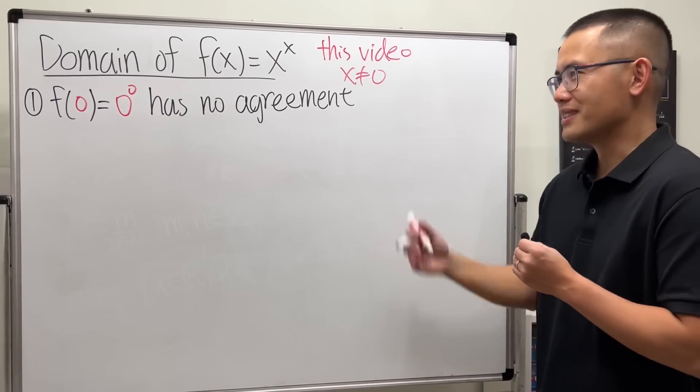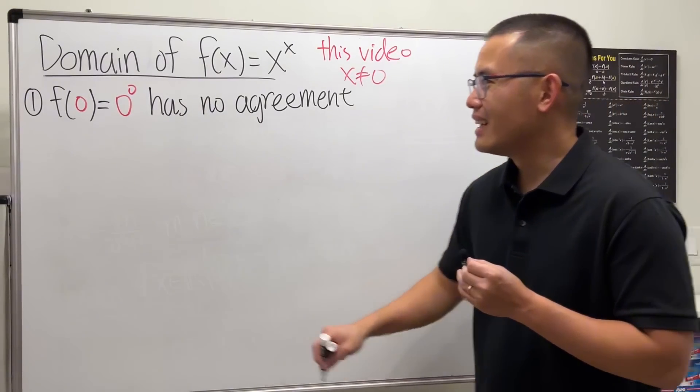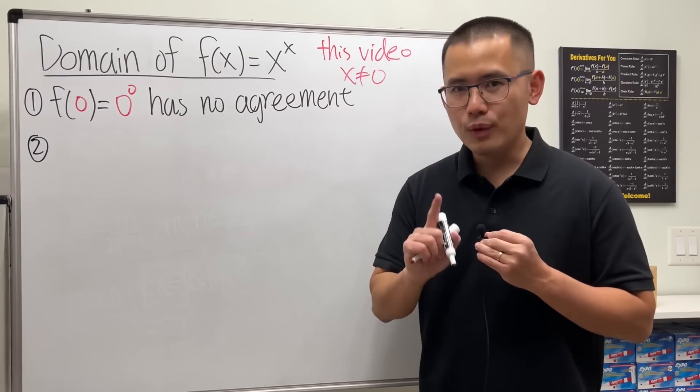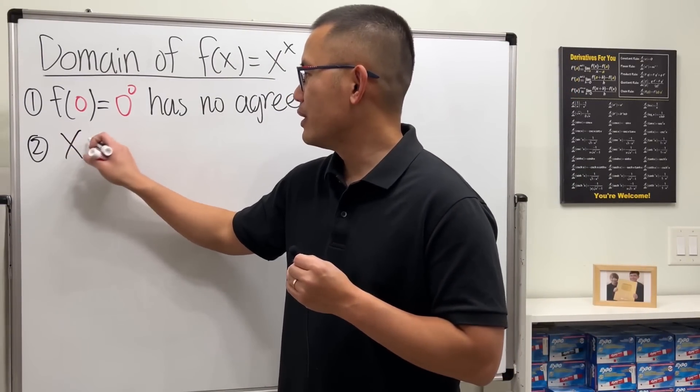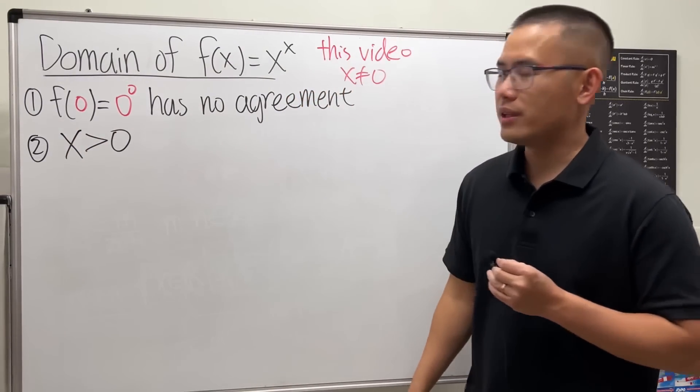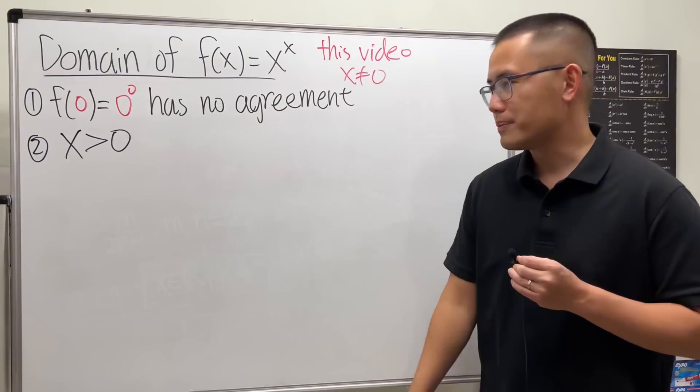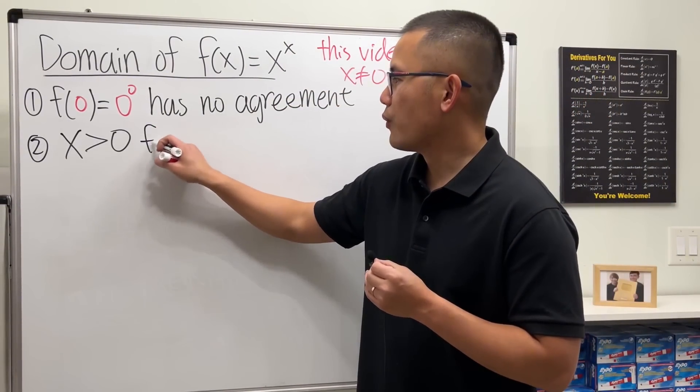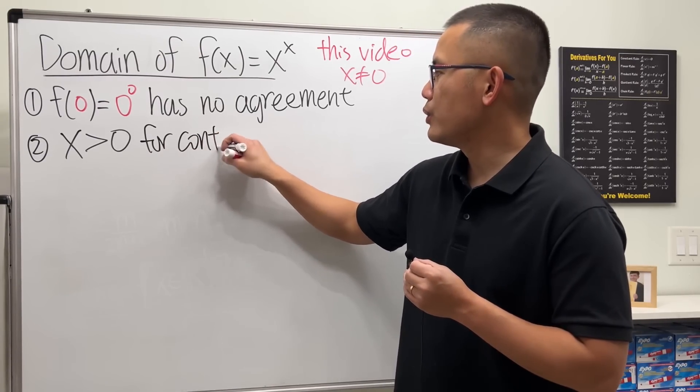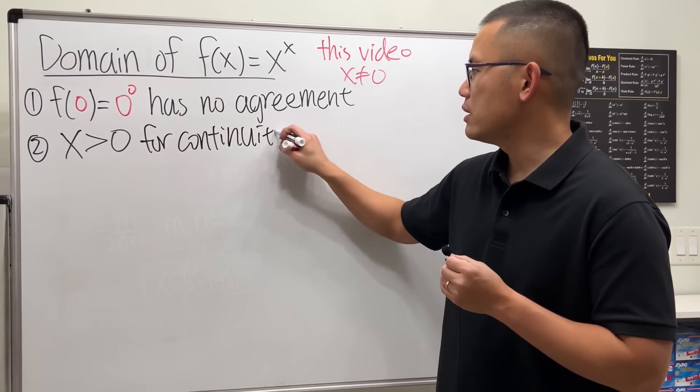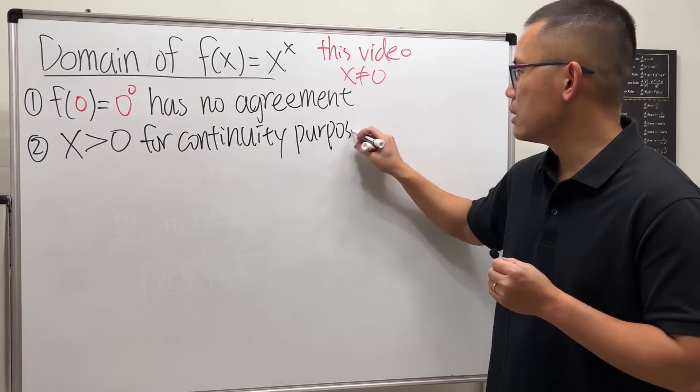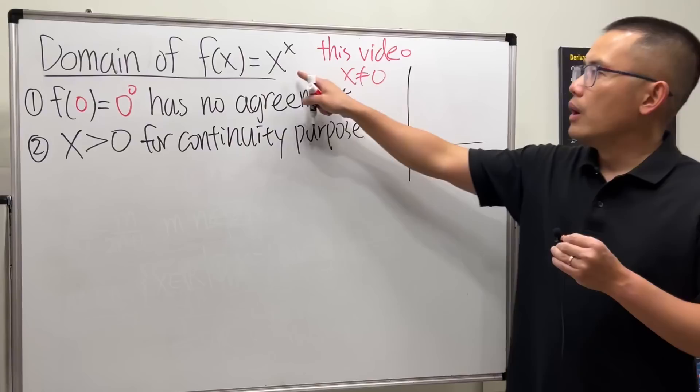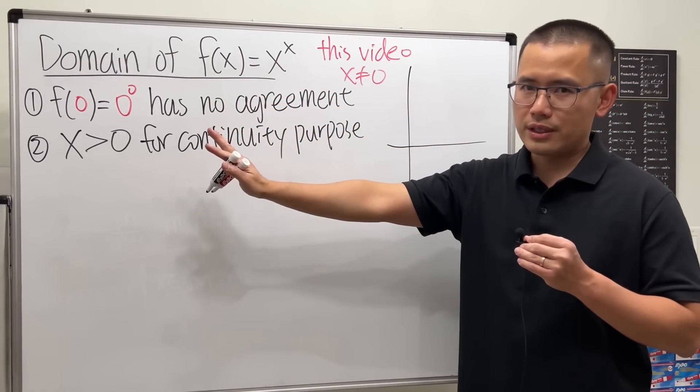Now, if you've seen this function in your Calc 1 class, most likely you only saw it in the first quadrant when x is greater than zero, and the function is also greater than zero. Why? Because for the function to be continuous, for continuity purposes.